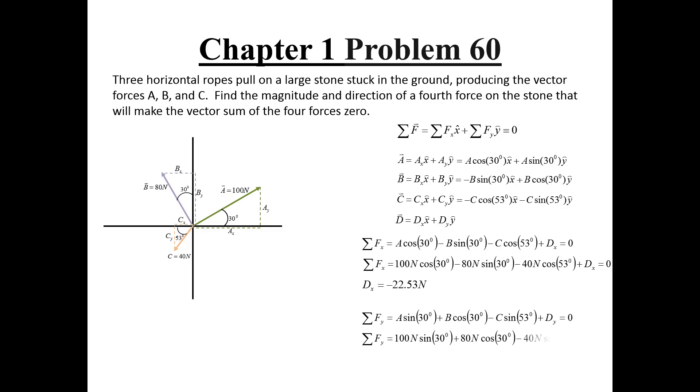So we have both of the components of our fourth vector, both of which are negative, telling us that our vector lies somewhere in the third quadrant.